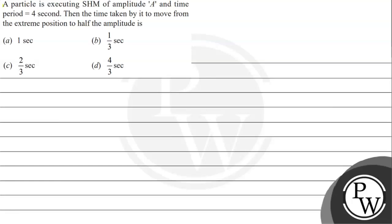Hello, let's read the given question. The question says a particle is executing SHM of amplitude A and time period 4 seconds. Then the time taken by it to move from the extreme position to half the amplitude is: option A, 1 second; option B, 1 by 3 second; option C, 2 by 3 second; option D, 4 by 3 seconds.